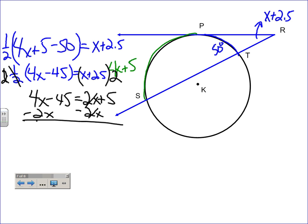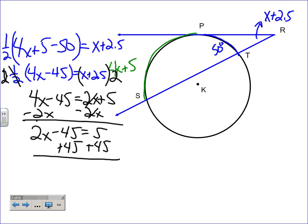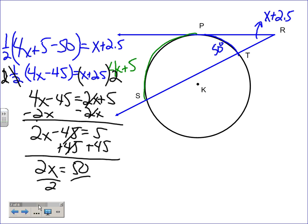These cancel. 4x minus 2x. 2x minus 45 equals 5. Add 45. So, 2x equals 50. Divide by 2. X is 25.